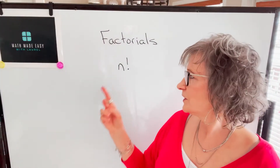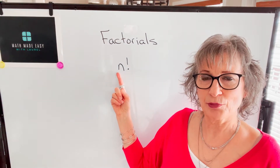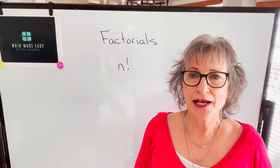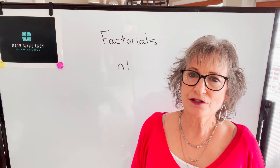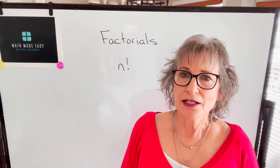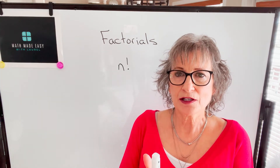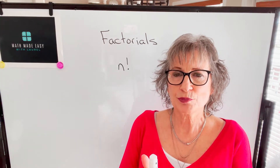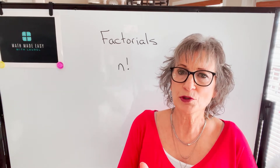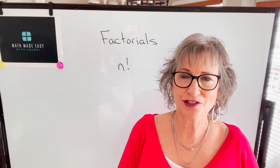Factorial notation looks like this, where you have some number — I've called it N — and an exclamation mark, and that represents a certain operation. It means that you take that number and you multiply by all of the whole numbers less than it until you get to 1.